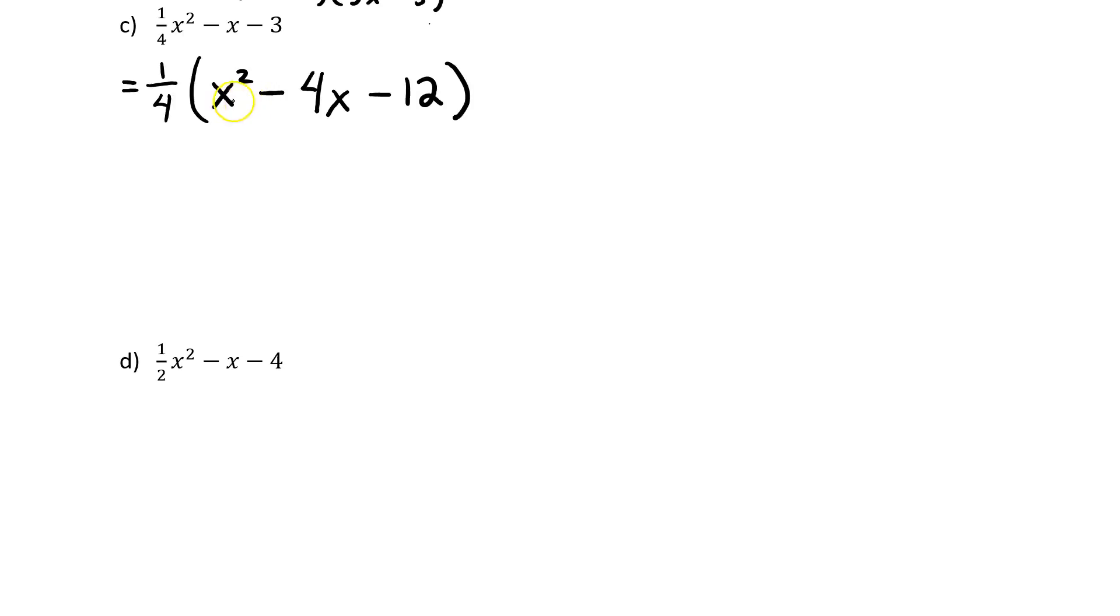Now this one we're kind of happy about because it's simple because the coefficient in front of the x² is one. So I can say ¼ open up those two brackets, x and an x, and my numbers here need to multiply out to negative 12 and add up to negative 4. It's not going to be 3 and 4 but it's going to be 2 and 6. So the numbers are going to be 2 and 6, but I'm going to make sure that the negative goes to the 6 and the positive goes to the 2. Done.